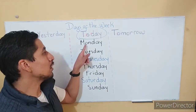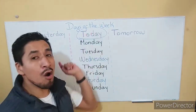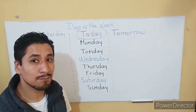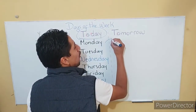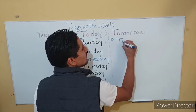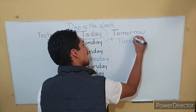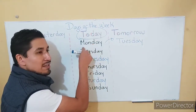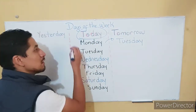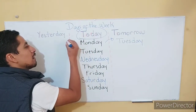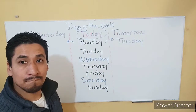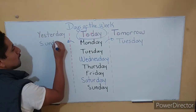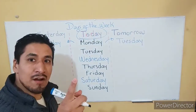Today is Monday. Si hoy es Monday. Tomorrow — mañana. ¿Qué día va a ser? Very good. Tomorrow is forward, so it's Tuesday. Very good. Tomorrow es mañana. So if today is Monday, si hoy es Monday — yesterday, ayer. ¿Qué día fue? Very good. Sunday. Excellent. Very good.